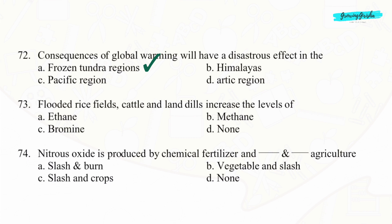Question 73. Flooded rice fields, cattle, and landfills increase the levels of Option B: Methane.